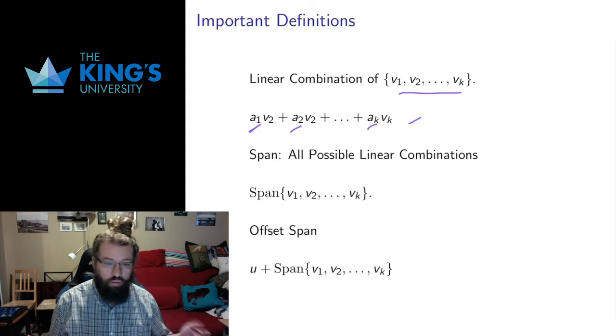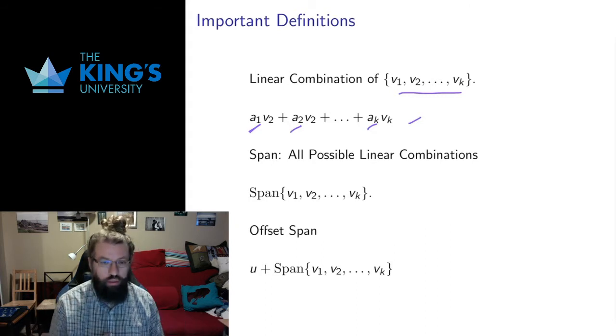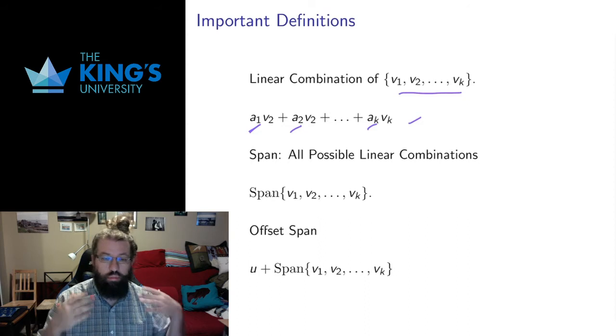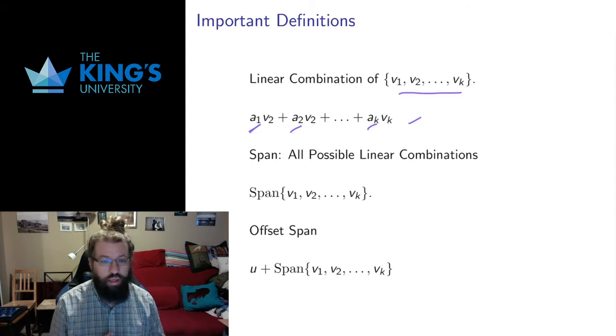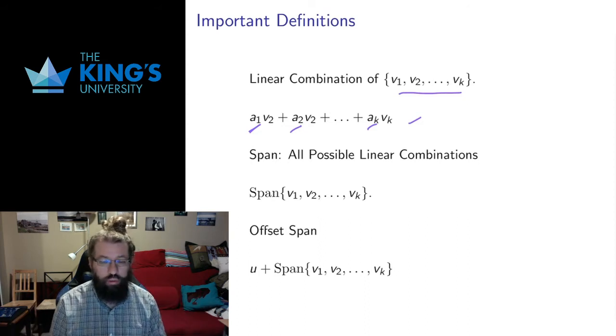So if I have any number of vectors, linear combination means I can multiply any of them by any constants — these constants can be different — add them all up, and see what I get.